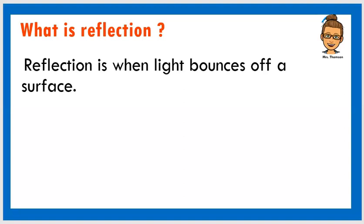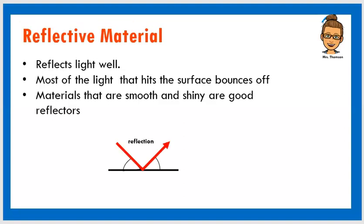But some material light bounces off much more than other materials. And some materials absorb most of that light when it hits it. So we're going to take a look. So we have what we call reflective material. Reflective material are the materials that reflect light well.